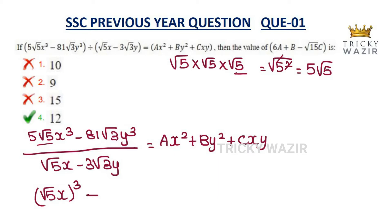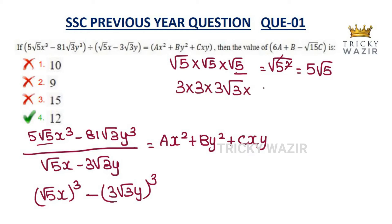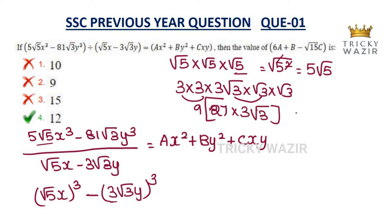And 81√3·y³ can be written as (3√3y)³. Let's verify: 3³ = 27, and (√3)³ = 3√3, so 27·3√3 = 81√3. So the numerator becomes (√5x)³ minus (3√3y)³, and we project this out using the identity a³ minus b³ = (a minus b)(a² + ab + b²).